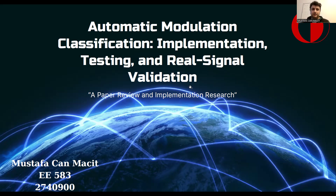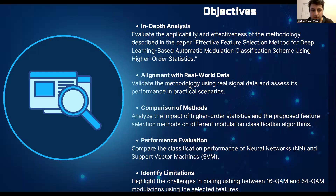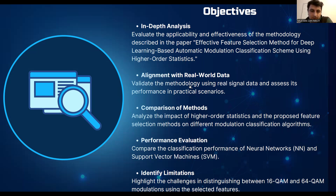This research aims to put theory into practice. We want to see if the feature selection method proposed in the paper called 'Effective Feature Selection Method for Deep Learning-Based Automatic Modulation Classification,' using higher-order statistics, actually works well or not.